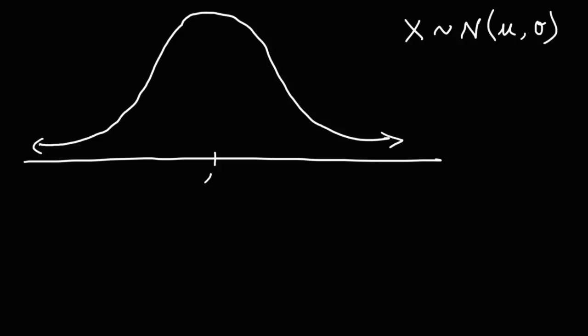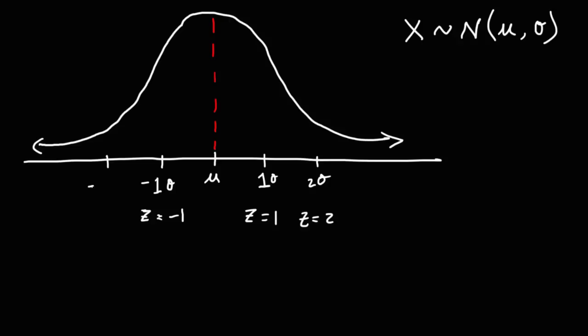The mean is right in the middle of the bell curve. One standard deviation from the mean corresponds to a z-score of 1. When x is less than the mean, the z-scores are negative. Two standard deviations away gives z equals 2; on the left side, z equals negative 2. Three standard deviations away gives z equals 3, and the same is true on the other side.